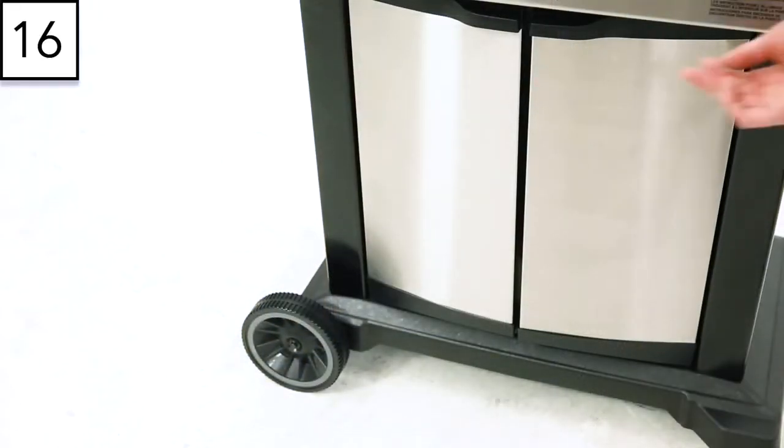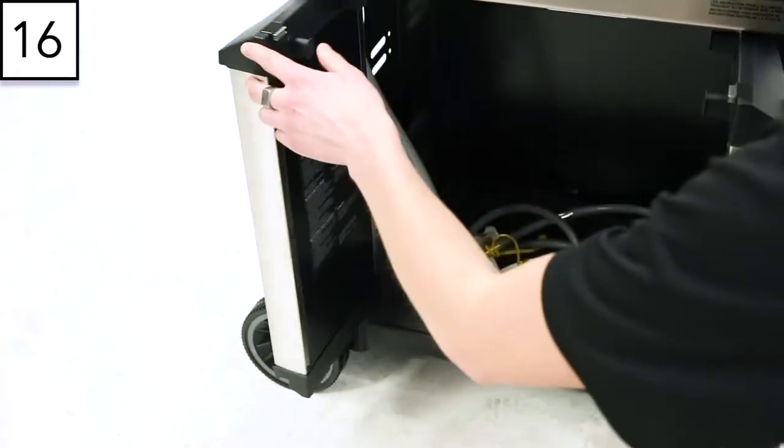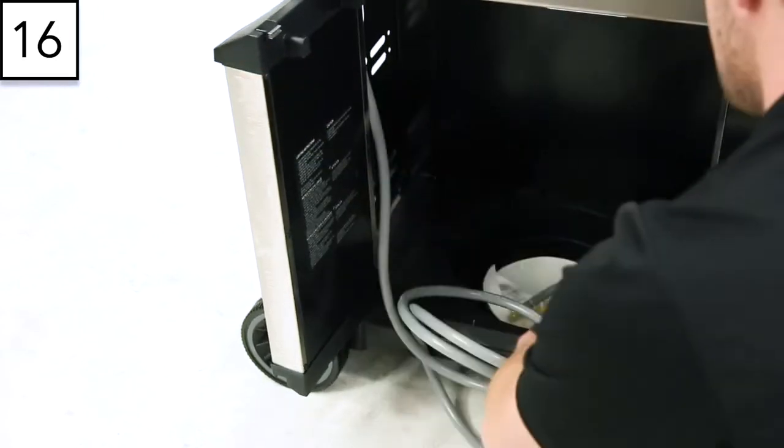Step 16. If you have a natural gas grill, pull the hose through the bottom opening on the base.